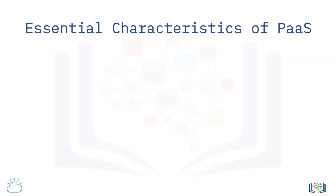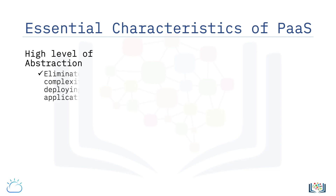Let's look at some essential characteristics of Platform as a Service, or PaaS. PaaS clouds are distinguished by the high level of abstraction they provide to the users, eliminating the complexity of deploying applications, configuring infrastructure, and provisioning and configuring supporting technologies like load balancers and databases.